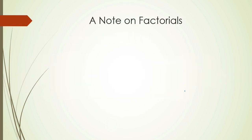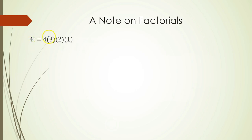Before we dive into using the ratio test, I want to talk a little bit about factorials. By definition, if you see something like 4 factorial, it's not like saying 4 like you're excited — it's actually a mathematical operation. It means you take 4 times 3 times 2 times 1. It's a decreasing product by one number less each time until you get all the way down to 1.